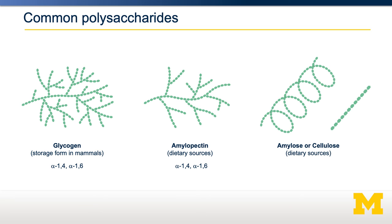Amylose and cellulose also contain only glucose. Amylose contains alpha-1,4 linkages exclusively, whereas cellulose consists of beta-1,4 linkages. The only difference is the position of that hydroxyl group: in amylose it points down (alpha-anchor), and in cellulose it points up (beta-1,4). In the case of amylose, it is extremely digestible by most humans and is a major source of glucose—think of foods like potatoes. On the other hand, cellulose is completely undigestible because we cannot break down beta-1,4 linkages, making cellulose function as an insoluble fiber.